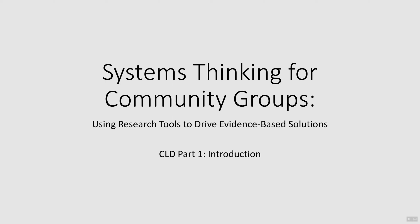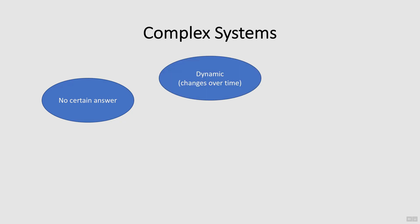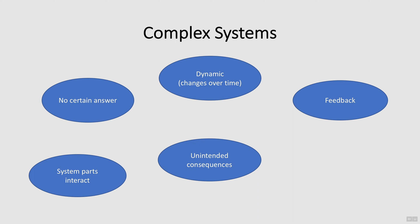Welcome to the training package designed to support systems thinking in community groups that are grappling with complex problems. Many, if not most, of the social problems facing community organizations today are complex problems, also referred to as wicked problems. They are characterized as having no certain answer and sit within a complex system that is dynamic — changing over time — with different parts of the system interacting and creating feedback loops and unintended consequences.